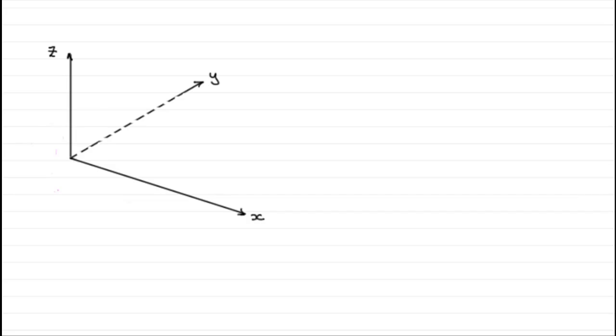Now so far we've been looking at vectors in 2 dimensions but you can also get vectors in 3 dimensions. And here I've got an x, y and z axis, 3 perpendicular axes, all at right angles to one another. And just as before when we had unit base vectors, we can have unit vectors in the directions of x, y and z.